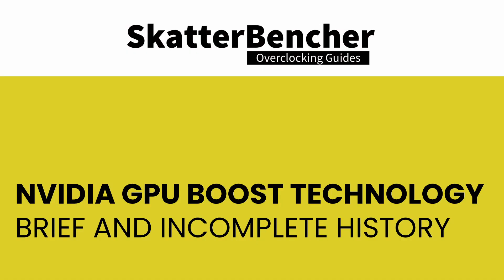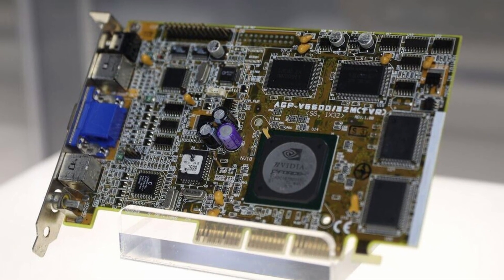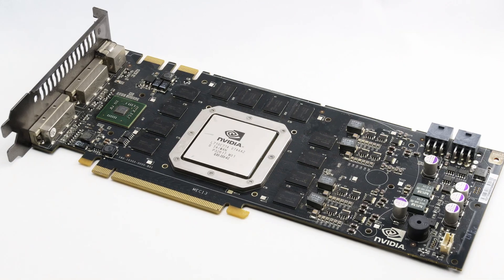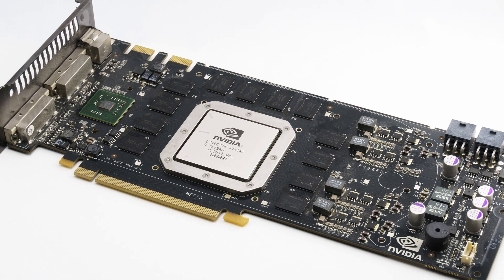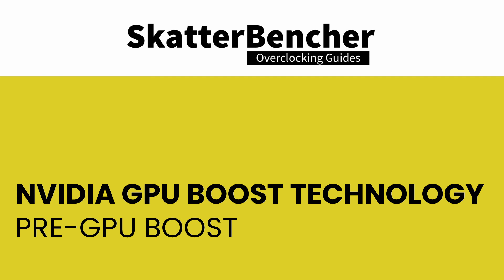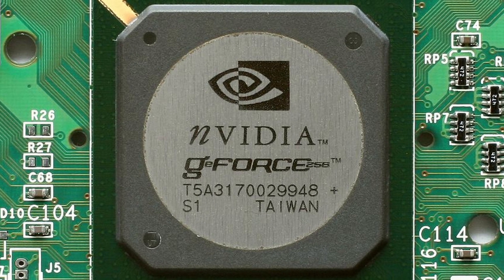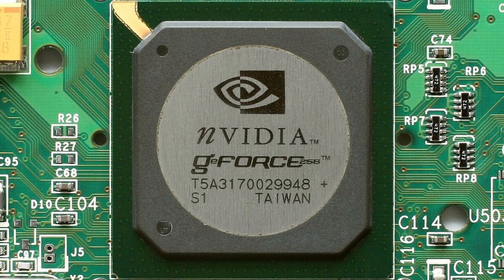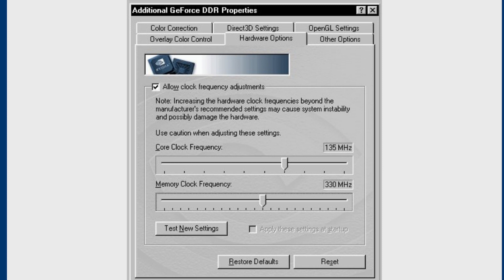NVIDIA has come a very long way since its founding in 1993. It released the world's first GPU in 1999 in the form of the GeForce 256. In 2006, it released its first CUDA-enabled graphics card in the form of the GeForce 8800 GTX. It was just these two frequencies — core and memory — that overclockers could tune until NVIDIA released the Tesla architecture in 2006.